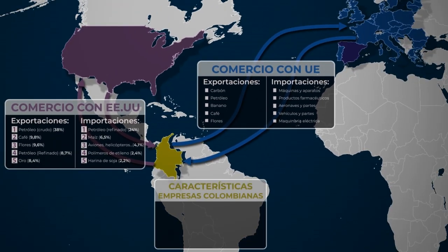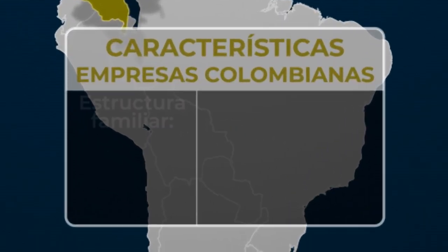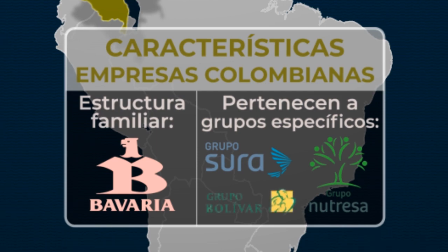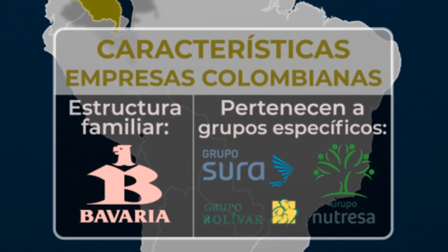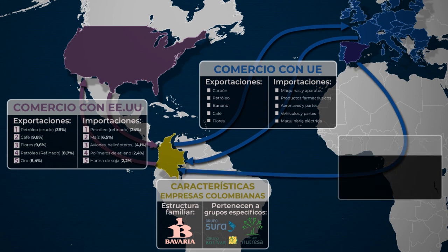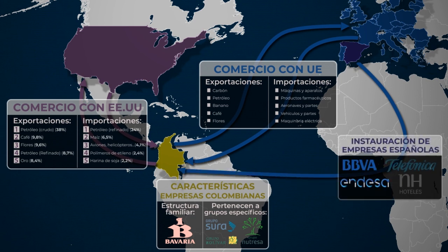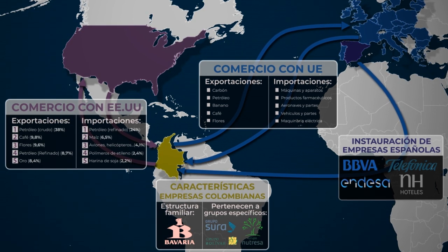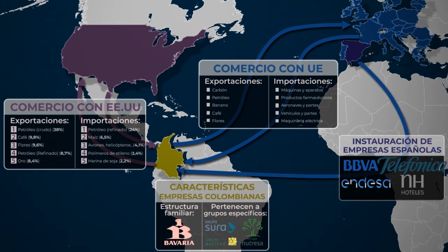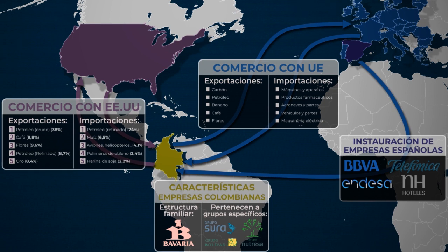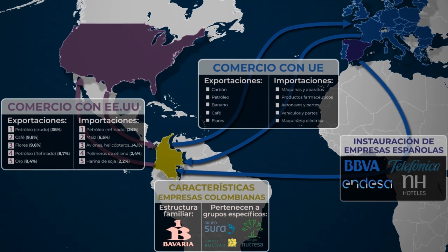Una característica de varias empresas colombianas es que son de estructura familiar o pertenecen a grupos específicos, por ejemplo el grupo Santo Domingo, el grupo Ardila y el grupo Sarmiento. También, a través de la influencia de España en la inversión en América Latina y a su vez en Colombia, en nuestro territorio se han instaurado empresas como el grupo BBVA y Telefónica. Esta influencia española es tal vez más importante y quizás más visible en la inversión extranjera.